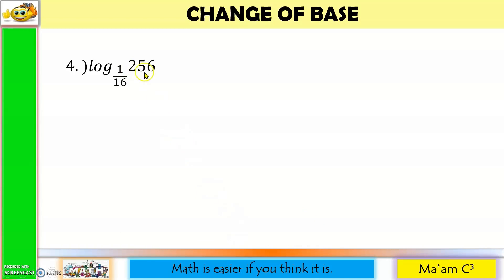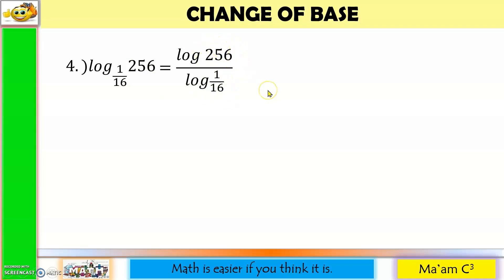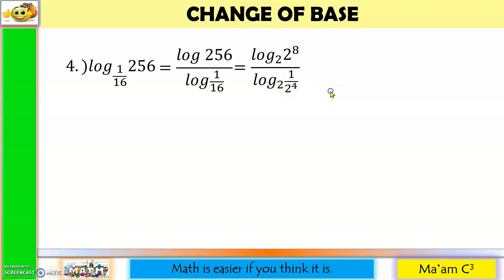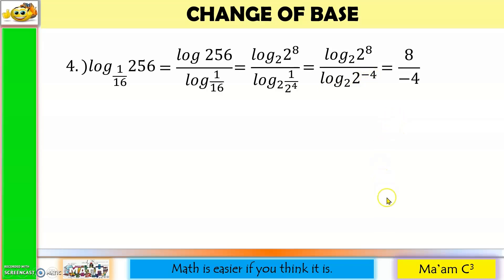Let us have some more. The logarithm of 256 to the base 1 over 16. So this will become the logarithm of 256 divided by the logarithm of 1 over 16. I'll express 256 as the logarithm of 2 to the 8th power to the base 2, because I want my x and b to be the same. Now 16 is 2 to the 4th power, so this will become the logarithm of 1 over 2 to the 4th power to the base 2. Bringing up 2 to the 4th, my exponent 4 will become negative. So the answer in the numerator is 8, and the answer in the denominator is negative 4. So 8 divided by negative 4 is negative 2.